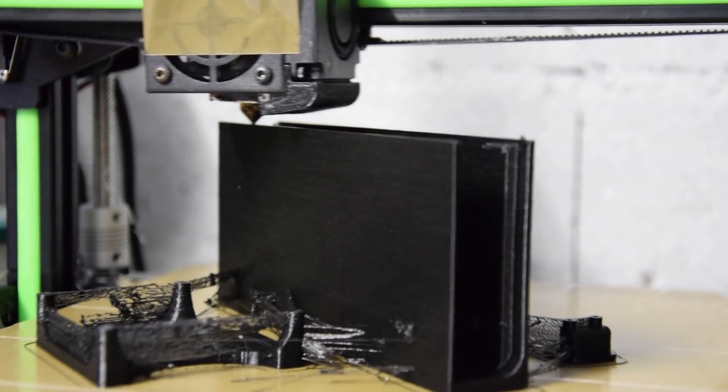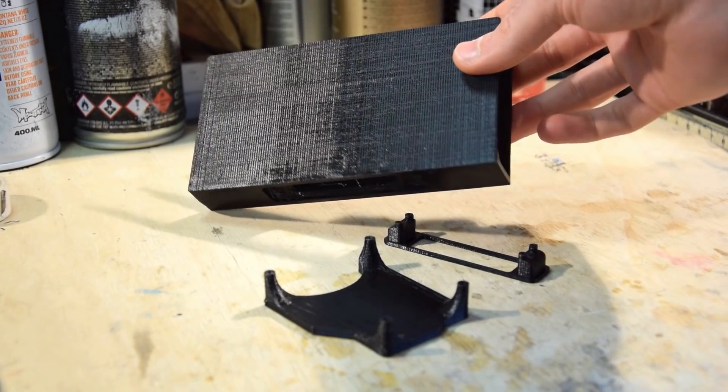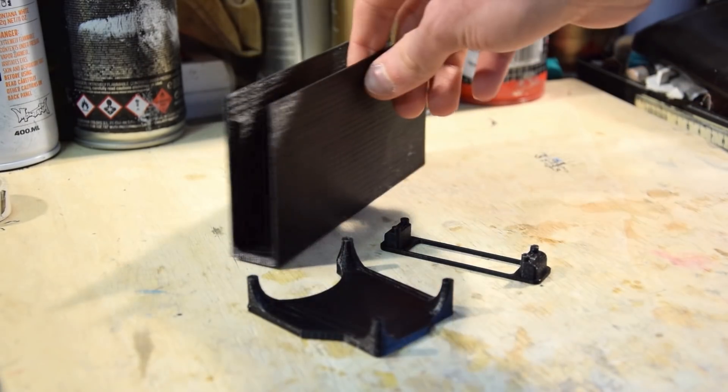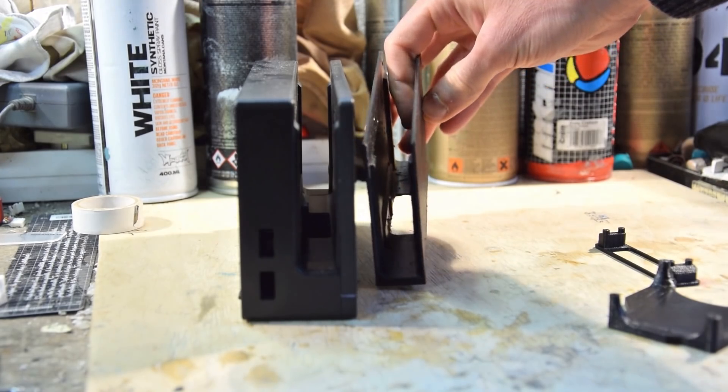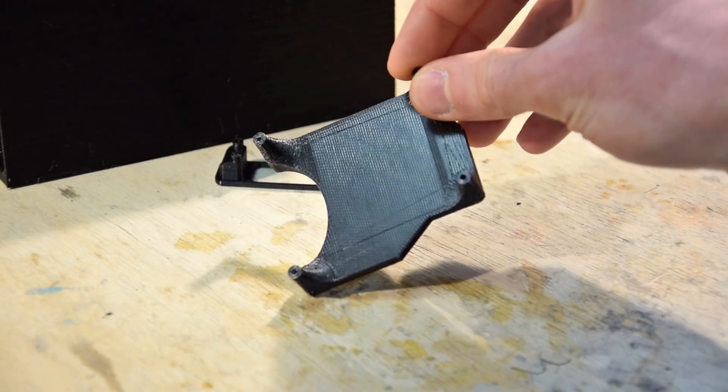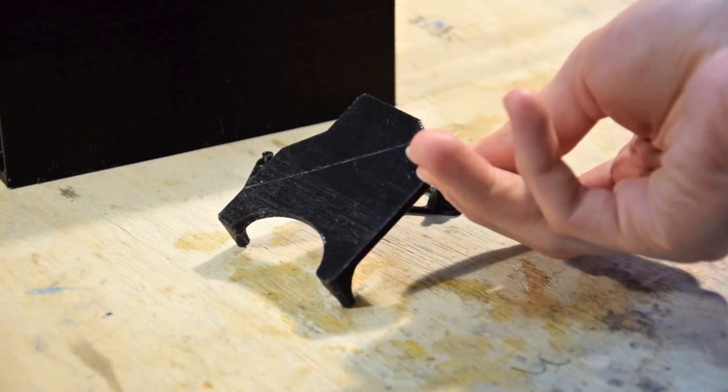Here's the result. The Switch dock looks pretty good compared to the original, even though you can definitely tell that it was 3D printed. Luckily, we won't see it much in the GameCube case. The other parts seem great. We'll see if they fit when we assemble everything.